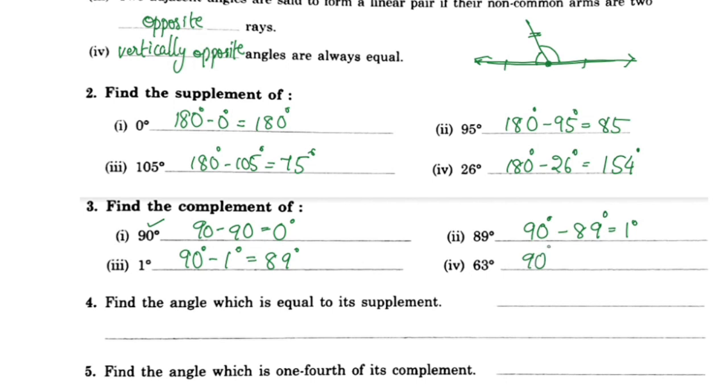To find the complement of 63 degrees, we subtract: 90 degrees minus 63 degrees equals 27 degrees.